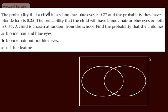We're told the probability that a child in the school has blue eyes is 0.27 and the probability they have blonde hair is 0.35. The probability that the child will have blonde hair or blue eyes or both is 0.45. A child is chosen at random from the school. Find the probability that the child has: a, blonde hair and blue eyes; b, blonde hair but not blue eyes; or c, neither feature.